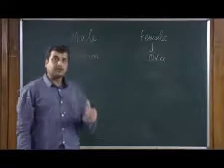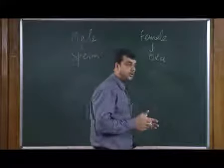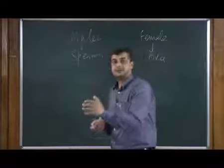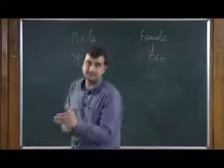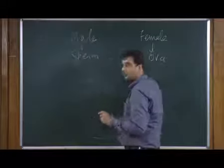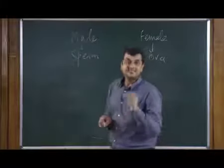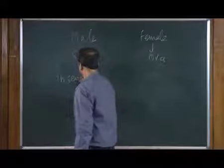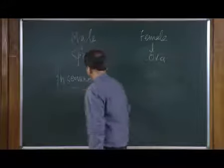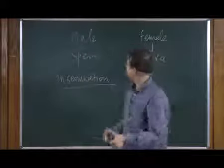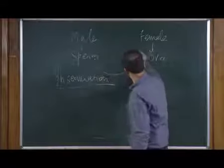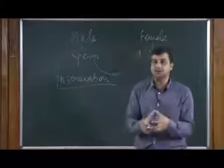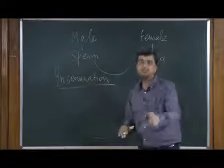There will be a process in order to mix these two things. The process of transfer of sperm into the female reproductive system in order to fuse sperm with ova is called insemination. So insemination is the process of transferring sperm to the female reproductive system in order to fuse ova with sperm.